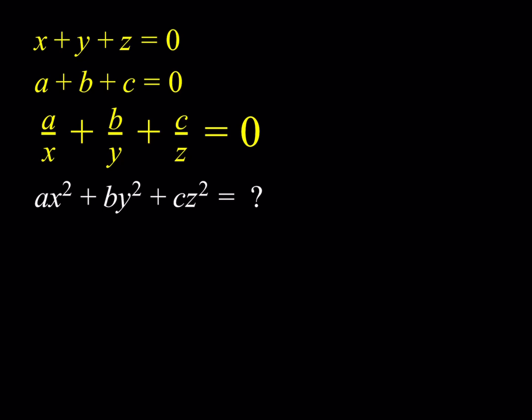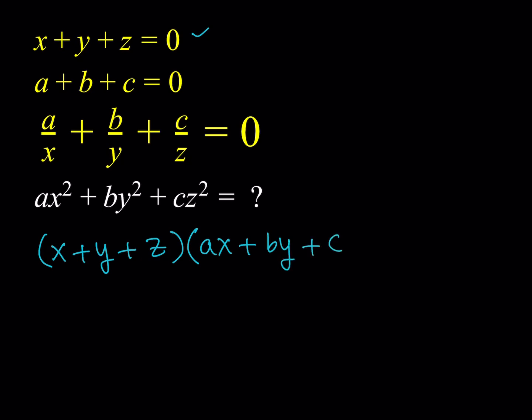We're going to be doing a lot of algebraic manipulations here. Our goal is to get ax squared plus by squared plus cz squared. To do that, it makes sense to take one of these expressions — in this case x plus y plus z — and multiply it by something such that we can get ax squared and so on. So we write x plus y plus z and multiply it by ax plus by plus cz. You might wonder why we're multiplying by this — well, notice that if you multiply by this, you're definitely going to get what you're looking for plus some other terms. For example, you should be getting ax squared, by squared, and cz squared, plus some other terms which we'll take care of.